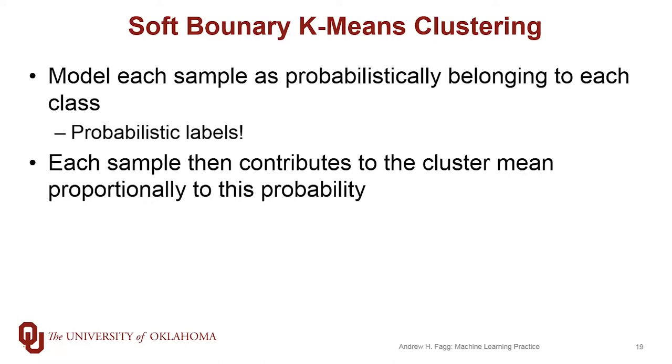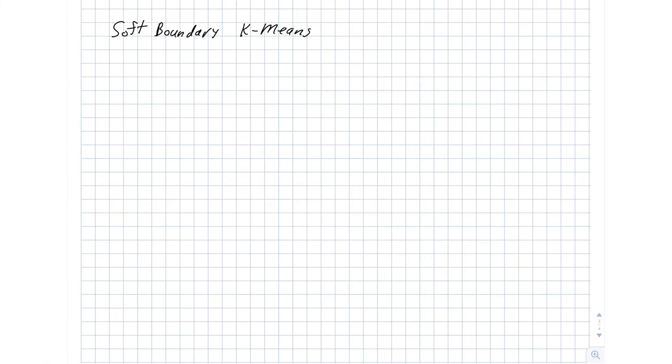Let's go ahead and take a look at the mathematics behind this. The first thing we're going to do is define a new variable here, and I'm going to refer to this as PIK. We're going to interpret this variable as the probability that sample i belongs to class k.